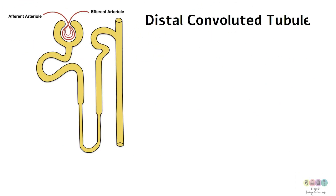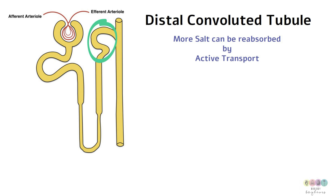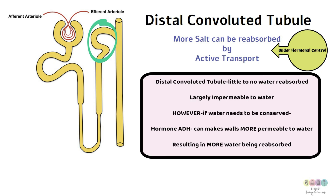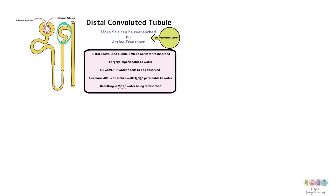From the loop of Henle we reach the distal convoluted tubule, where more reabsorption can take place under certain conditions. For example, more salt can be reabsorbed by active transport, but only under hormonal control when required. In the distal convoluted tubule there is little to no water reabsorption — it's largely impermeable to water. However, if the body needs to conserve water, the hormone ADH can make the walls of the distal convoluted tubule more permeable to water, resulting in more water being reabsorbed.